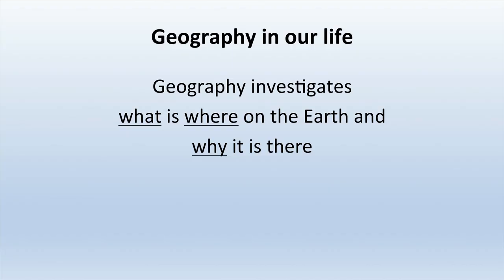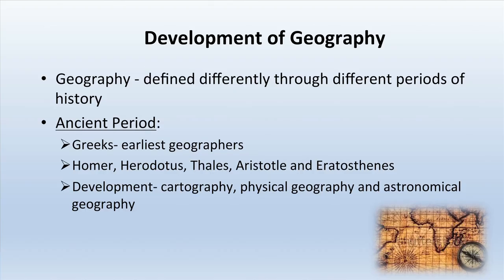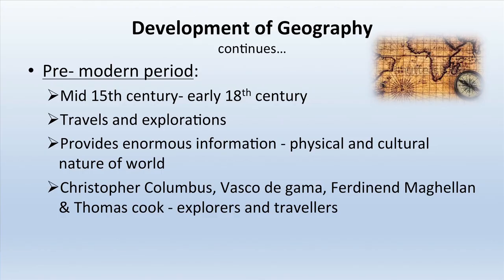Geography investigates what is where on the earth and why it is there. How did geography develop from the third century BC to now? Geography has been defined differently in different periods of history. During ancient times, the earliest Greek geographers included Homer, Herodotus, Thales, Aristotle, and Eratosthenes. Development during this time was mainly in the fields of cartography, physical geography, and astronomical geography.